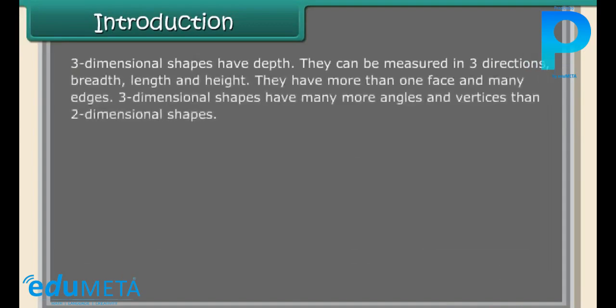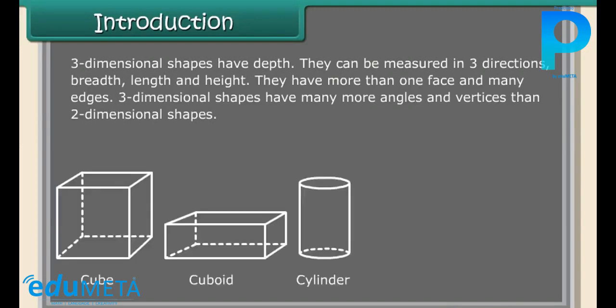Three-dimensional shapes have depth. They can be measured in three directions: breadth, length, and height. They have more than one face and many edges. Three-dimensional shapes have many more angles and vertices than two-dimensional shapes, such as cube, cuboid, and cylinder.